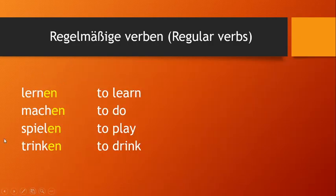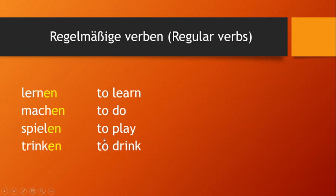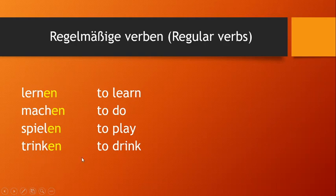So these are four other regular verbs which you can conjugate in the same way: 'lernen' (to learn), 'machen' (to do), 'spielen' (to play), and 'trinken' (to drink). The verb stem is everything before the '-en' ending. Try conjugating these in the same way using the endings we've learned.